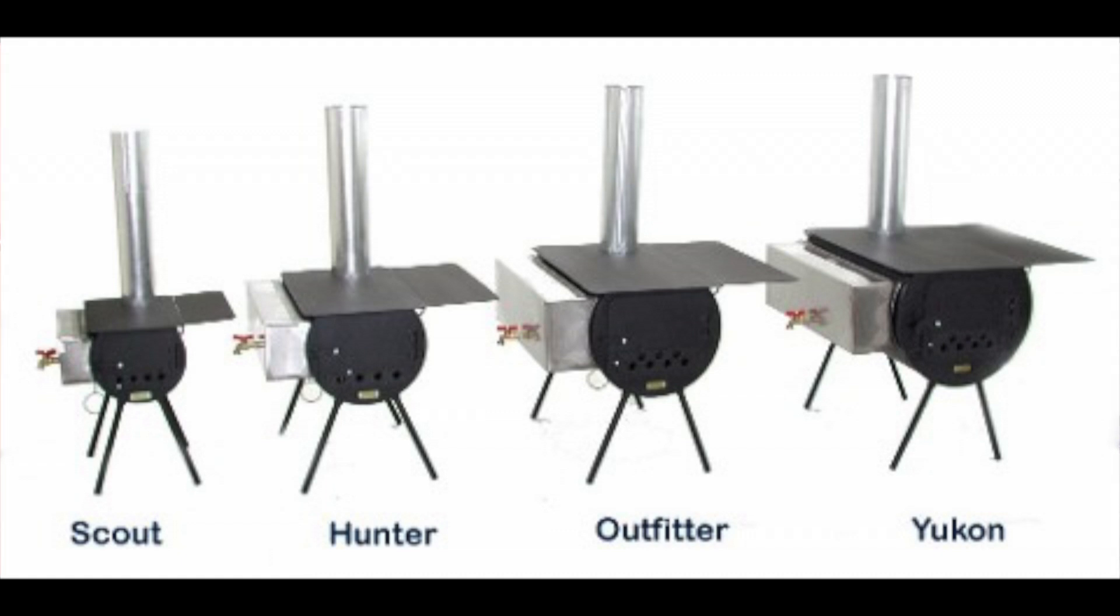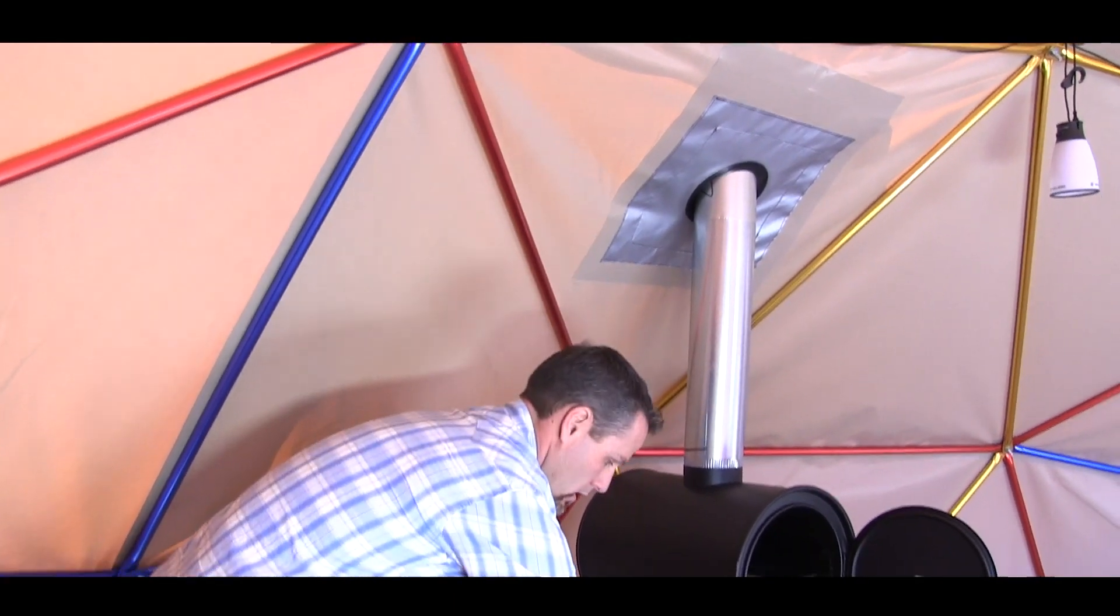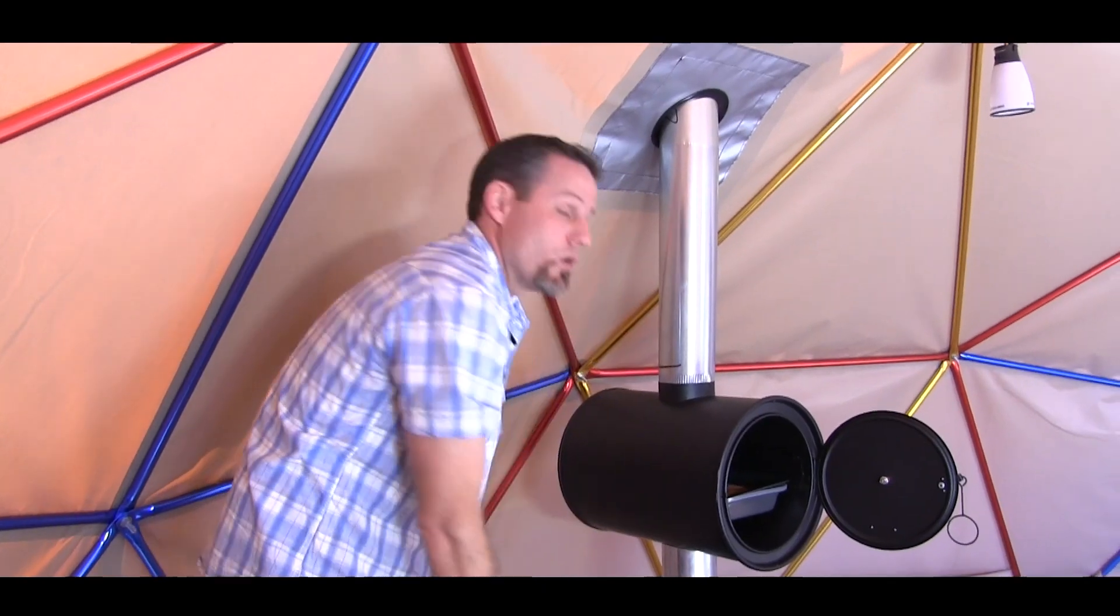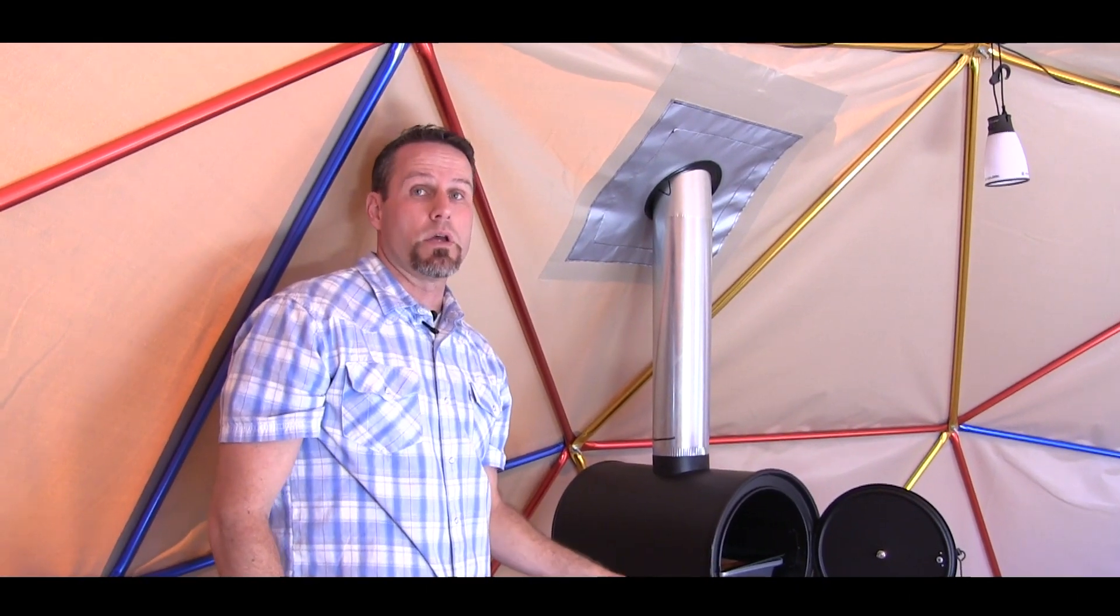Your water jacket that comes with it—the Outfitter and the Yukon are exactly the same size. The Hunter water jacket is a little bit smaller, so you don't get quite the volume in your water jacket as you do with the Outfitter and the Yukon.